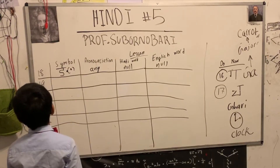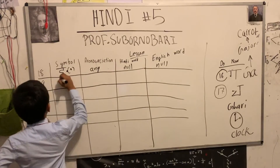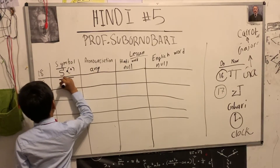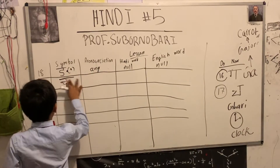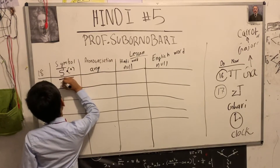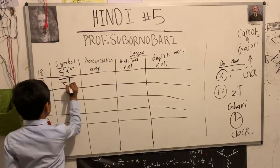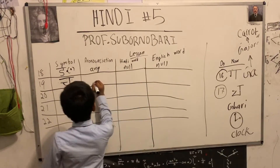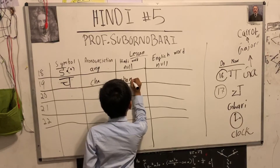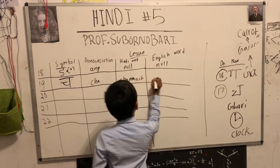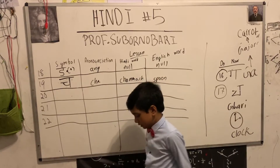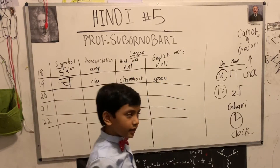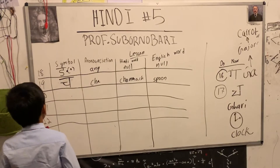For letter 19, the symbol looks a bit like a shape giving birth to a little baby shape. It's pronounced Cha. The Hindi word is Chamats — what is Chamats in English? It's spoon. So Cha, Chamats, spoon. Sorry everybody — technical difficulty.